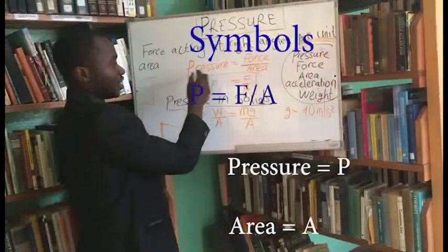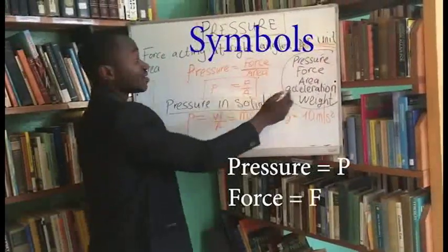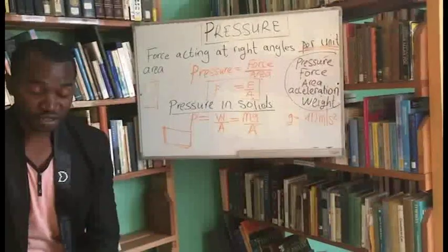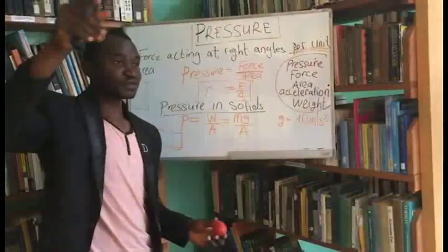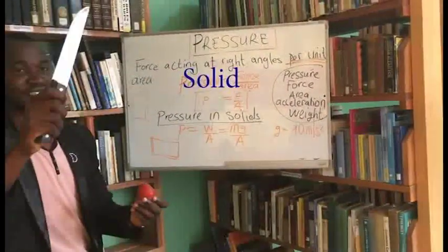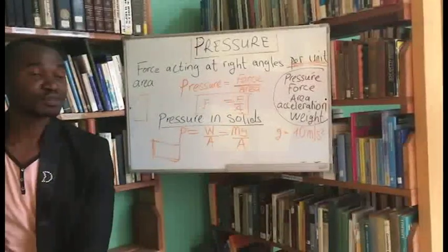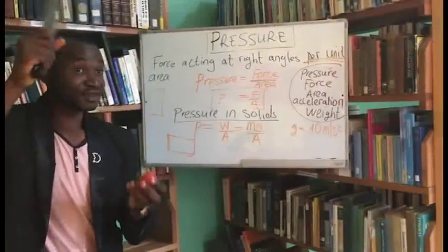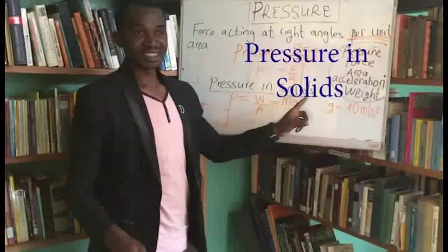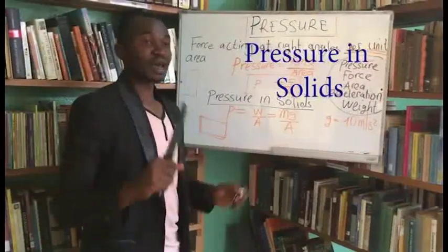The symbol of pressure is capital P, the symbol of force is capital F, and the symbol of area is capital A. This is the formula to calculate pressure for anything. As we saw, we used a knife — which is a solid material. So this is pressure in solids. When the object becomes a liquid, we call it pressure in liquids; when it becomes a gas, pressure in gases. But today, we'll be talking mostly about pressure in solids and how to calculate it.